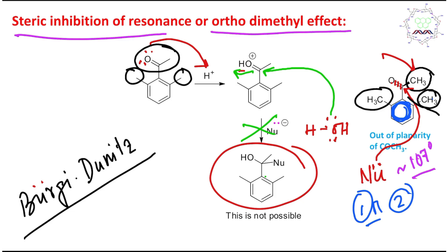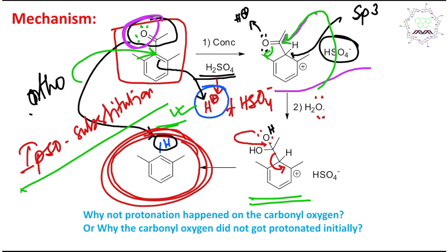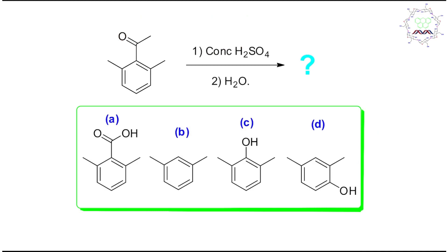I am not saying protonation on oxygen is not possible, but it doesn't lead to any productive pathway. When we discuss any chemical reaction mechanism, we need to focus on which pathway exactly results in our product. In this case, the mechanism proposed is ipso substitution. The proton attacks the ipso position, which is ortho to both methyl groups, making it significantly electron-rich. This proton attack on the benzene ring is actually aromatic electrophilic substitution. Since this position is significantly electron-rich, this ortho ipso substitution is possible here.